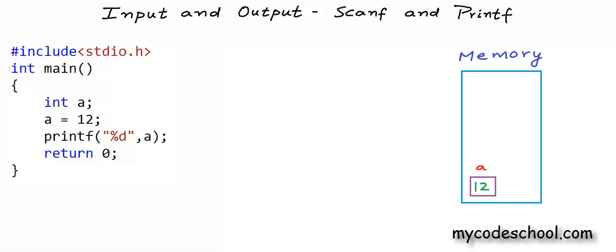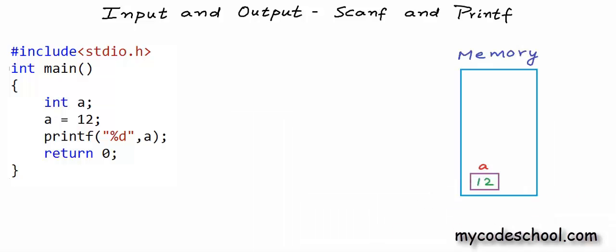We will discuss encoding mechanisms for different data types in later lessons. Coming back to this program — we are not doing something very meaningful here by declaring, initializing a variable, and then printing its value. We are not solving a problem. With whatever we have learned so far, let's write a simple program to solve a real problem. I want to write a program to find the product of two integers.